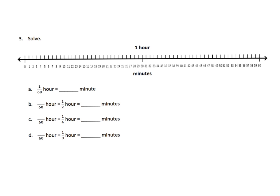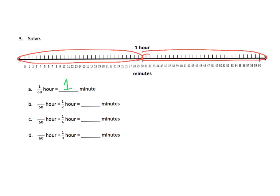Same exact process, only this time we're talking about hours and minutes. We know that one hour is equal to 60 minutes. So 1/60th of an hour — if you take an hour and chop it up into 60 pieces — that's one minute. A half an hour means you take that hour and chop it in half, so you get two equal sized pieces of 30 and 30. So a half an hour is equal to 30 minutes, which is 30 sixtieths of an hour.